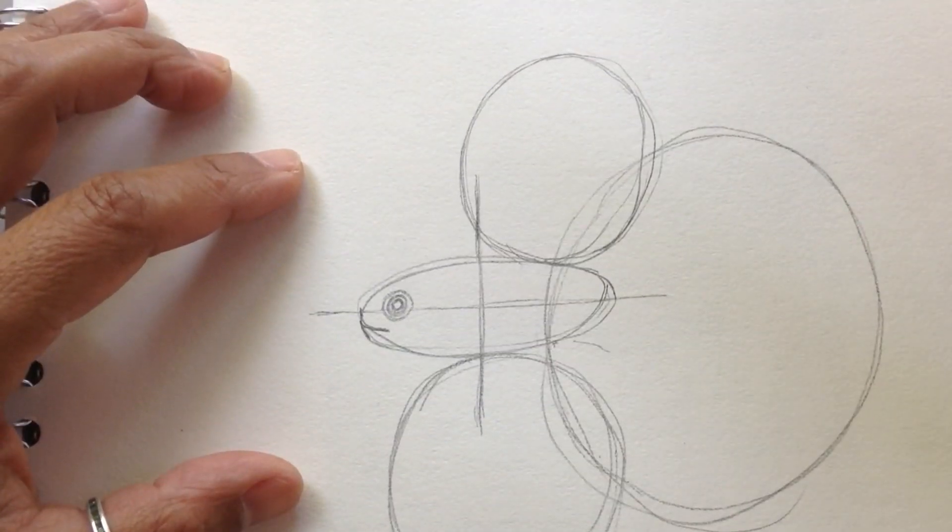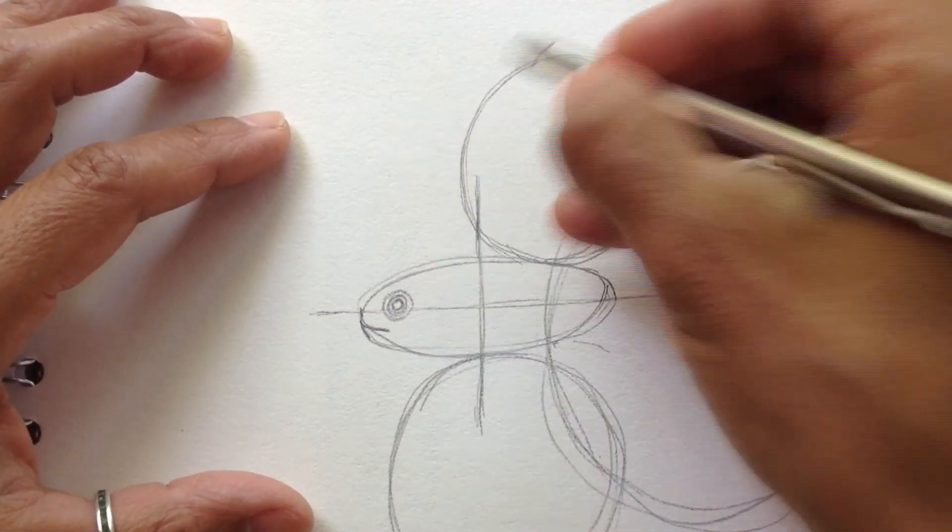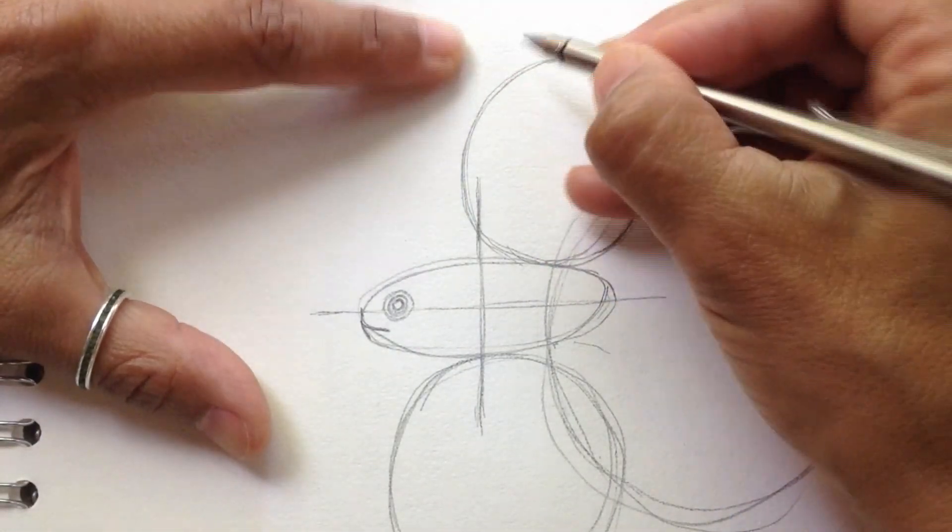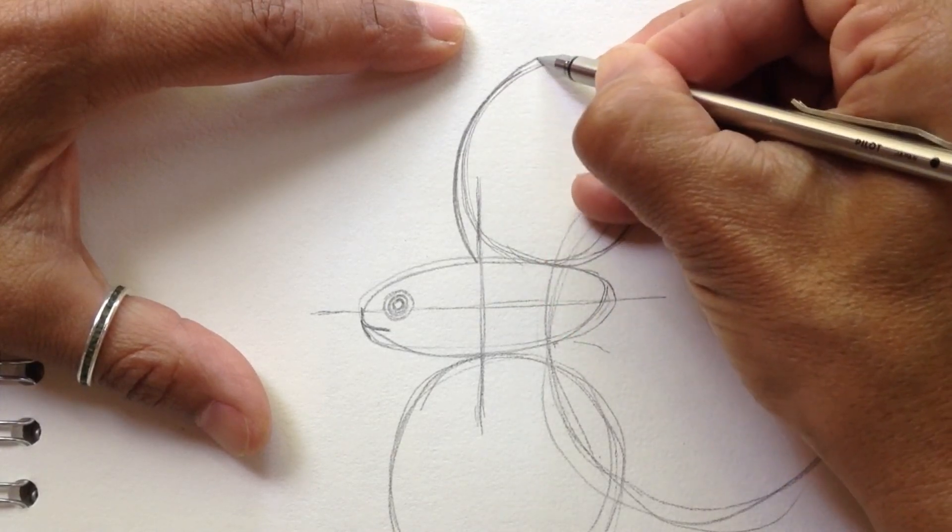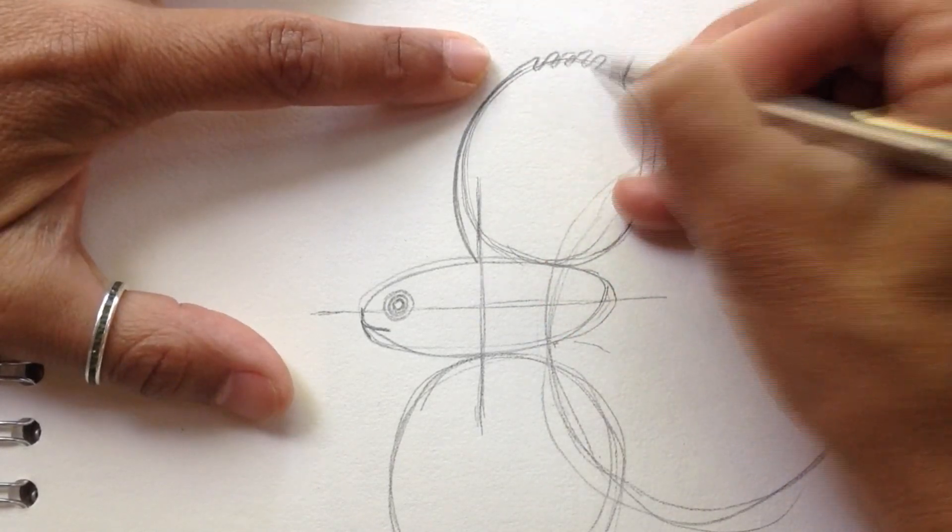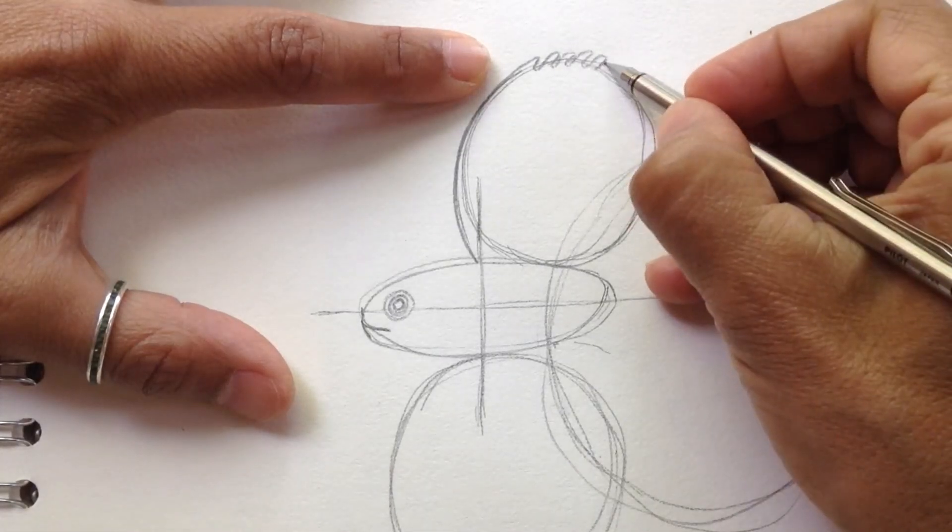Now I'm going to start connecting all the lines. I'm going to start with the upper fin. This fin will be like this. And you see the border? They have this kind of little curves.